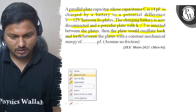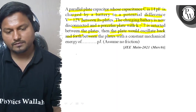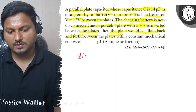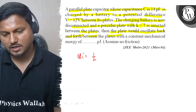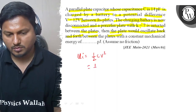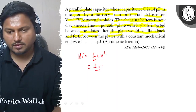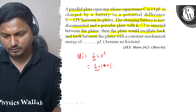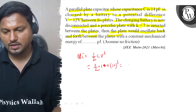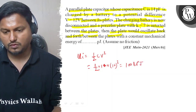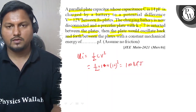So now we have the formula for energy stored. Initially, energy U equals half CV squared. We put in the values: half times C which is 14 pF, times V squared which is 12 squared. This gives us 1008 pJ.